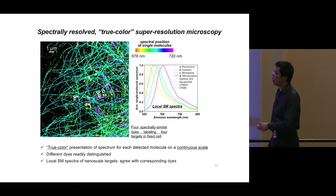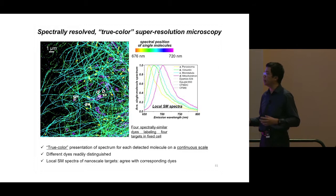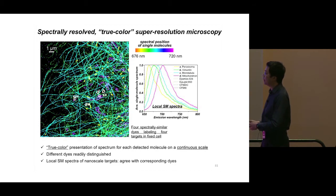For each molecule we detect both the position and the spectrum. For the position we simply plot it in x and y. For the spectrum we measured for each molecule, we plot it as a color of each individual dot on a continuous color scale. This generates continuous true-color super-resolution microscopy images very different from conventional imaging, where multicolor fluorescence microscopy uses different filter sets for different color channels.